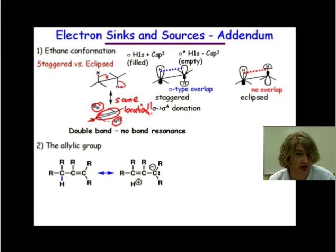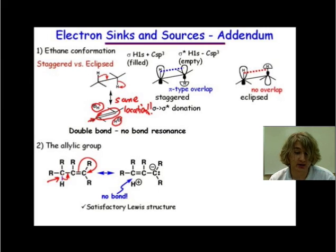We can draw this double bond no bond resonance structure, shown here on the right. Draw our arrow coming from our CH single bond, make a double bond, push our electrons onto the right carbon. We've drawn a satisfactory Lewis structure. Everything looks fine. Everything's valid. And our atoms did not move their spatial locations.